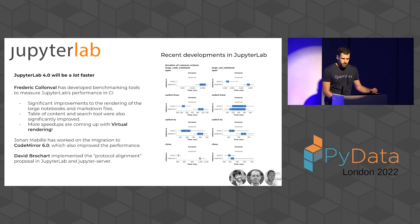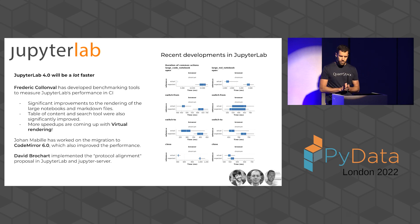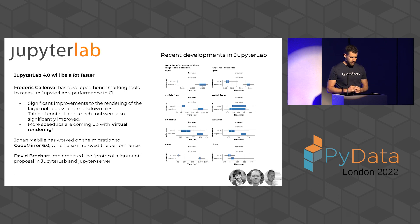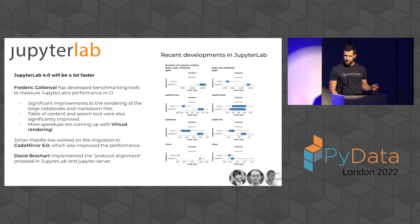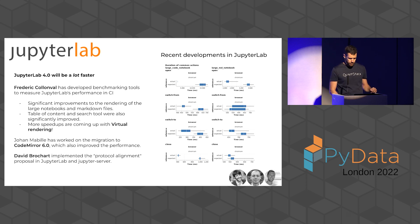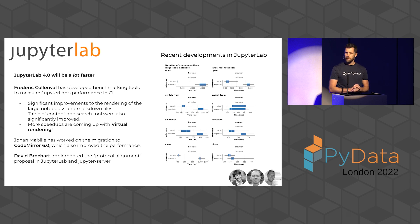JupyterLab 4 will also be a lot faster. Frederic Colonval, who works with me at Quantstack, started an effort to improve JupyterLab performance with the development of benchmarking tools. After being able to measure performance more scientifically, we made major improvements to the rendering of Jupyter notebooks, the table of contents, and search tools. Even greater improvements are coming in 4.0 with virtual rendering of the notebook, only rendering the parts currently on screen. The benchmarks shown are produced by this new benchmarking tool and show improvements from the update to CodeMirror 6, the text editor used in JupyterLab.